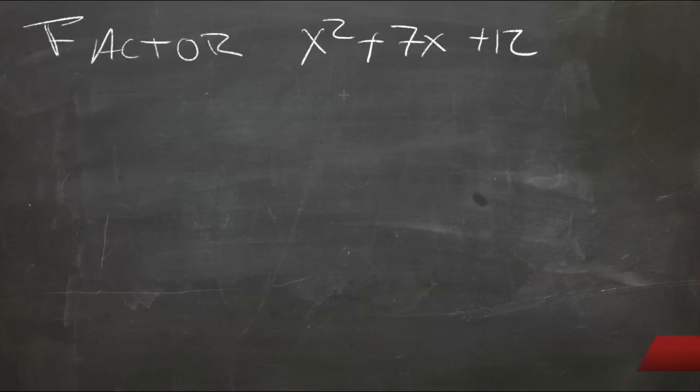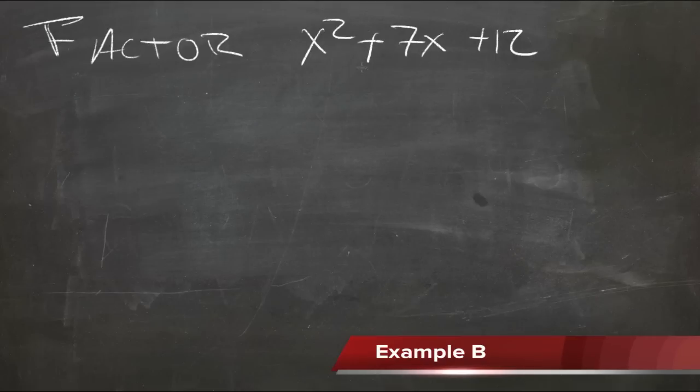Factoring trinomials really does get easier with practice, so we're going to do a couple of them here just to get a little more comfortable with the process. Here we have x squared plus 7x plus 12. So what we need are two numbers that multiply to be 12 and add to be 7. So multiply to be 12 could be 6 and 2, could be 12 and 1, could be 3 and 4.